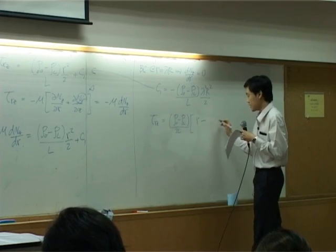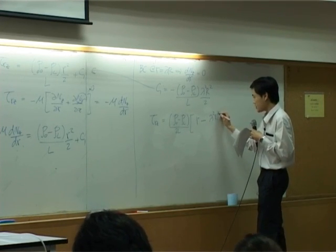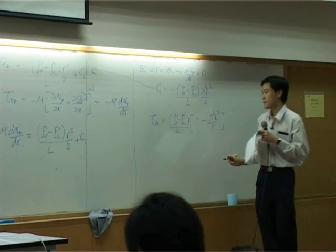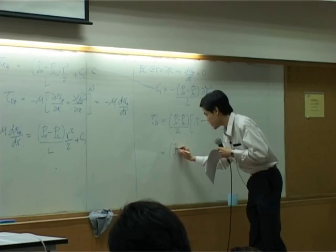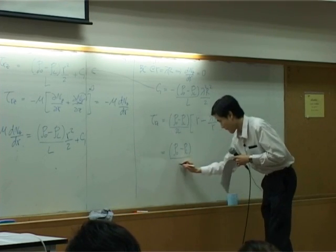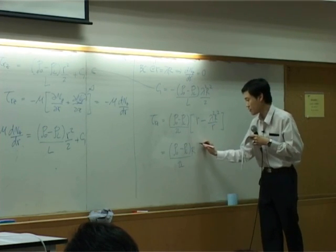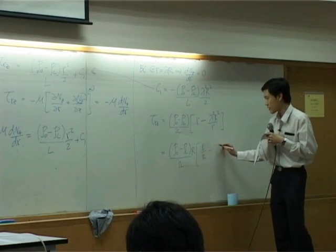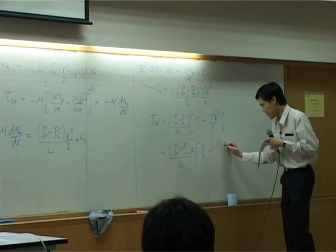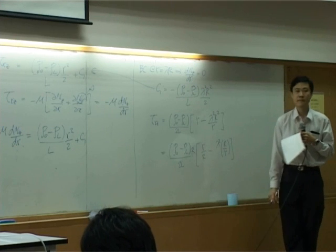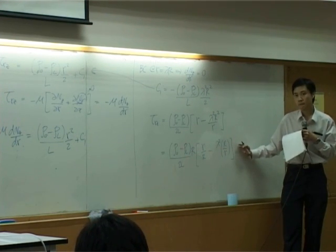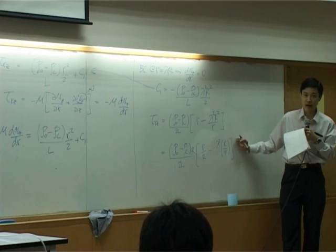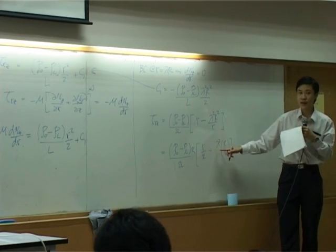So you have r minus lambda squared r squared over small r. Just to be pretty, change the term a little. Take r out. Take capital r out. This term will become r over capital r, subtracted by lambda squared capital r over small r. Now, this would be our shear stress profile. Of course, this shear stress profile is not completed yet. Why? Because lambda is still unknown. We do not know lambda yet.